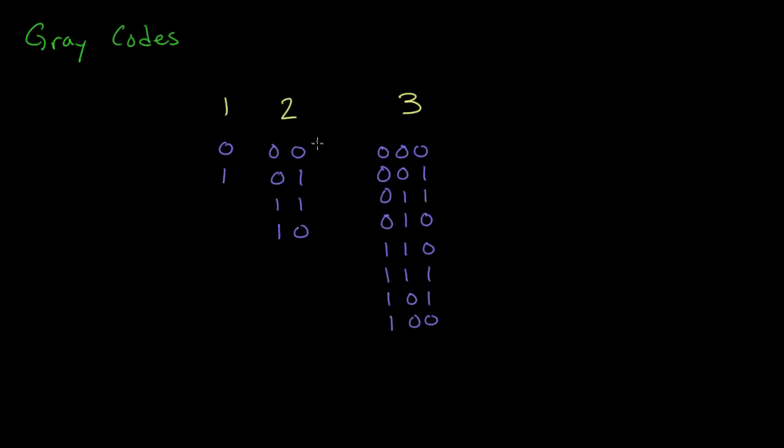But in the 2-bit gray code we start to see something interesting. We start with the first combination of 00, which is the normal one. The second one is 01, and you can see it differs from the first one by just flipping the rightmost bit from a 0 to 1.